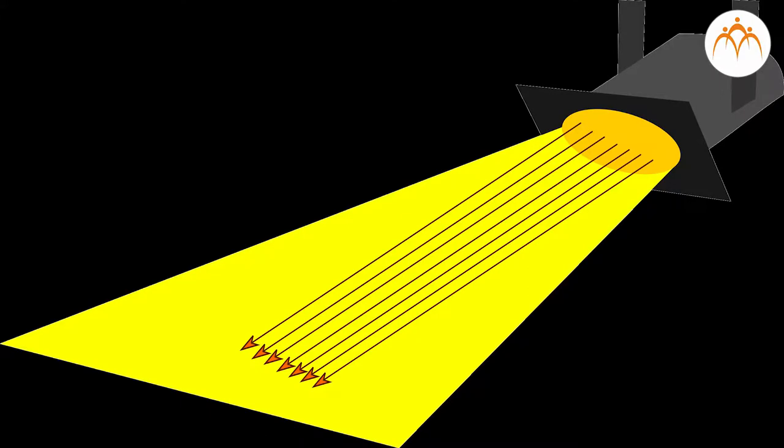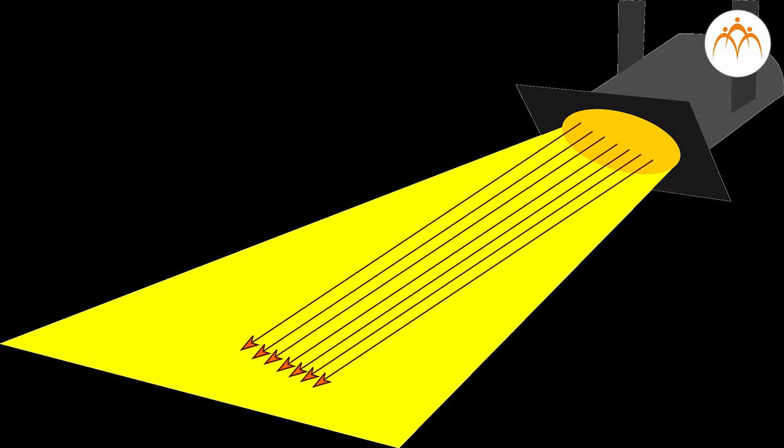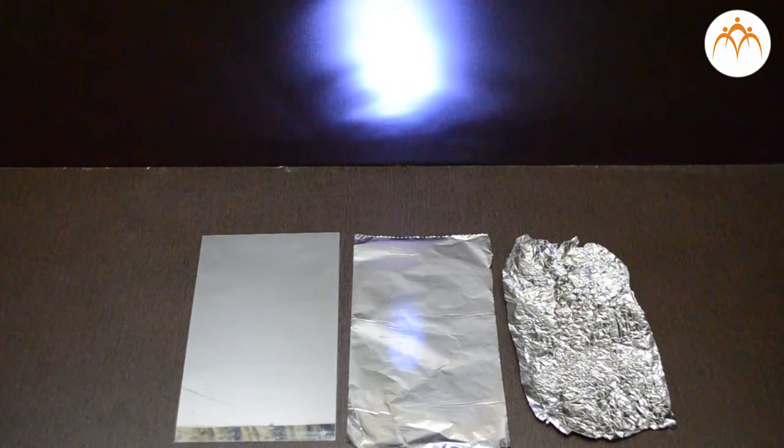A light beam can be thought of as a bundle of individual light rays which are traveling parallel to each other. Each individual light ray of the bundle follows the law of reflection. If we project the torch on the food wrapping foil made up of aluminum, it is like specular reflection.